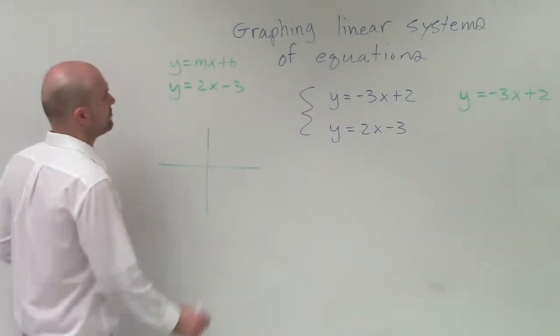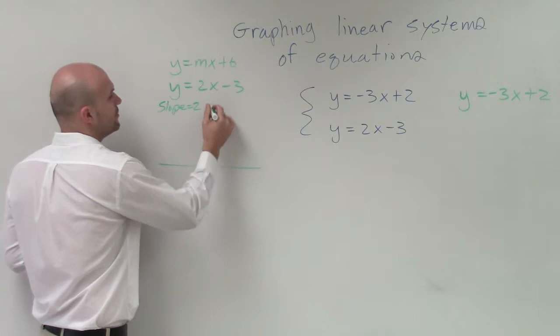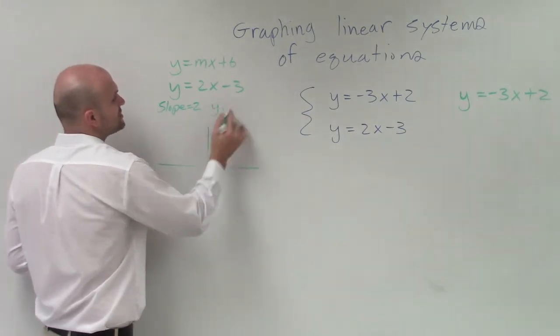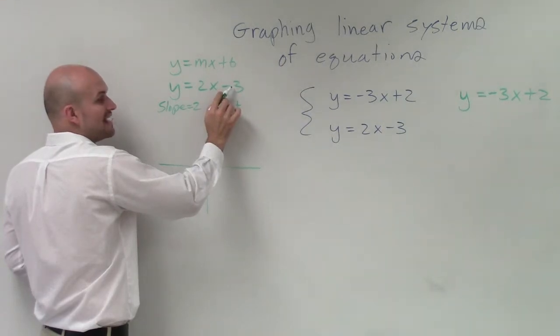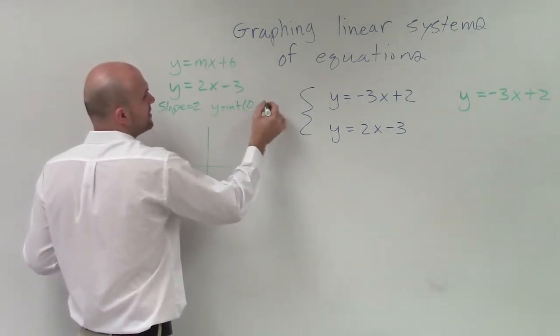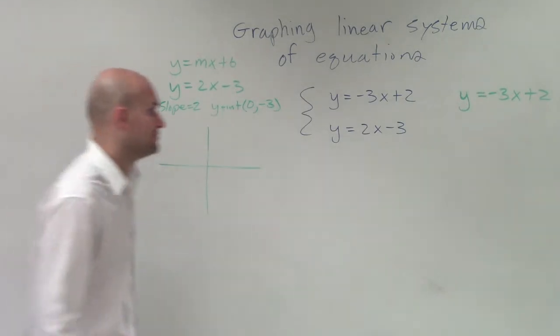So remember, m is going to represent our slope. So I can say my slope equals 2, and my y-intercept, which is a coordinate point, is going to be what my b is, which is negative 3. And remember, the y-intercept we write as a coordinate of 0, comma, b, which would be 0, comma, negative 3.